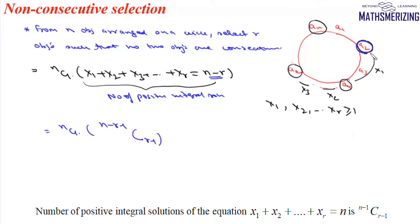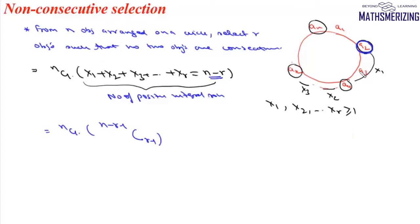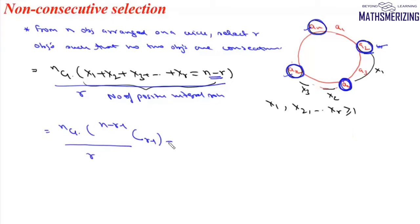We have selected the first element and applied the condition that between any two selections there must be at least one element. However, the problem is not complete. If we started with a2 and selected a4, ak, and an, we get the same selection if we start with a4 and continue with ak, an, and a2 — or starting from ak or an as well. So the total number of distinct selections is the entire value divided by r. The total number of ways to select r objects from n objects on a circle so that no two are consecutive is: n × (n-r-1)C(r-1) / r.